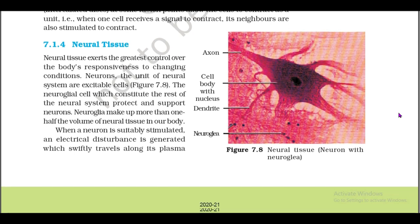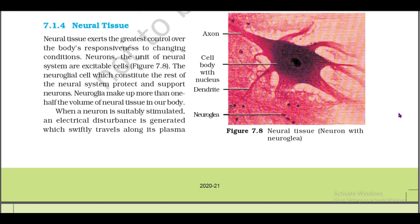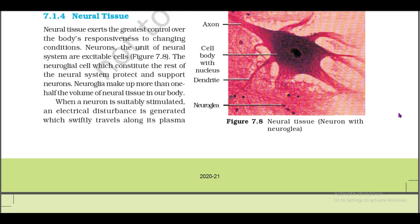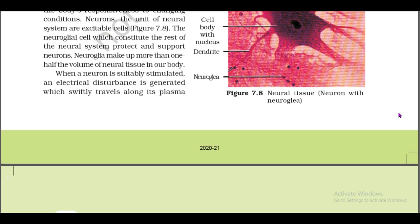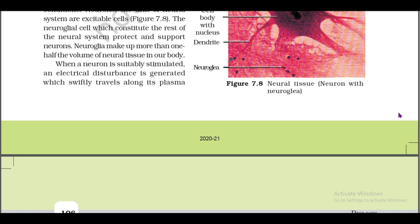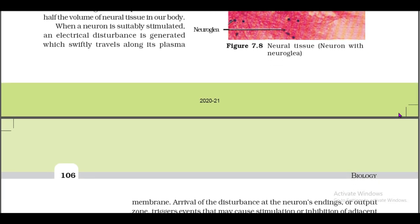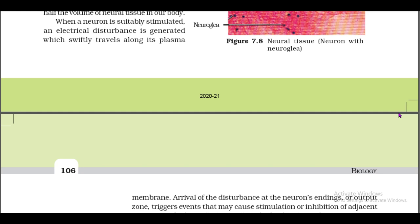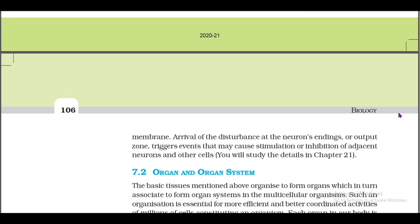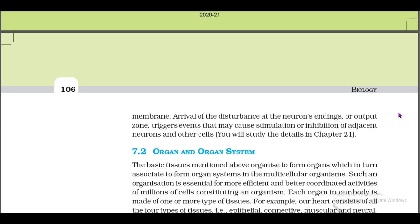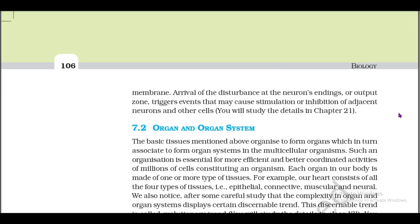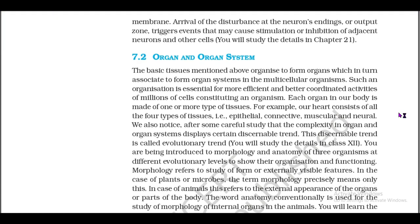7.1.4: Neural Tissue. Neural tissue exerts the greatest control over the body's responsiveness to changing conditions. Neurons, the unit of the neural system, are excitable cells (figure 7.8). The neuroglia cells, which constitute the rest of the neural system, protect and support neurons. Neuroglia make up more than one half of the volume of neural tissue in our body. When a neuron is suitably stimulated, an electrical disturbance is generated which swiftly travels along its plasma membrane. Arrival of the disturbance at the neuron's ending triggers events that may cause stimulation or inhibition of adjacent neurons and other cells.